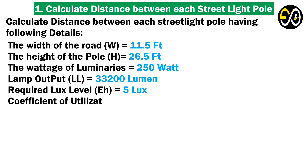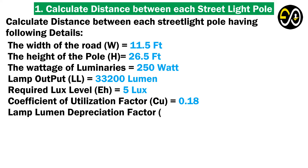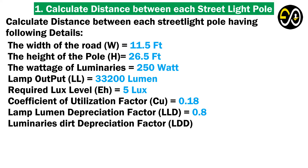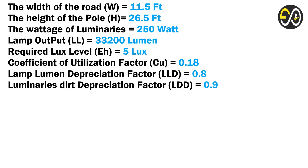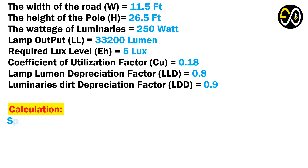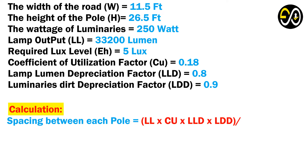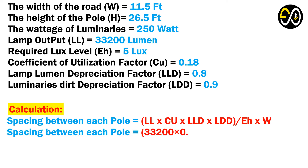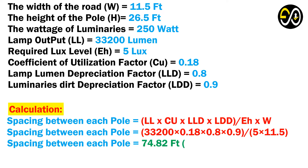Coefficient of utilization factor CU equals 0.18. Lamp lumen depreciation factor LLD equals 0.8. Luminaires dirt depreciation factor LDD equals 0.9. Calculation: Spacing between each pole equals LL times CU times LLD times LDD, over E times H times W. Spacing equals 33,200 times 0.18 times 0.8 times 0.9, over 5 times 11.5, which equals 74.82 feet.